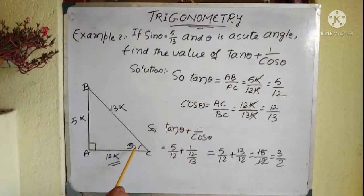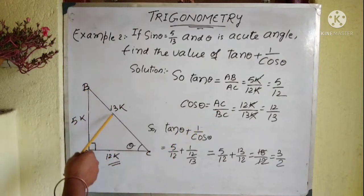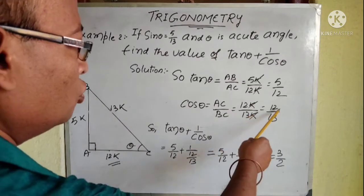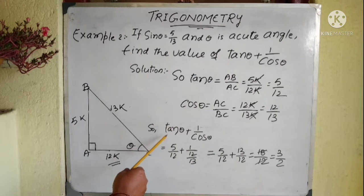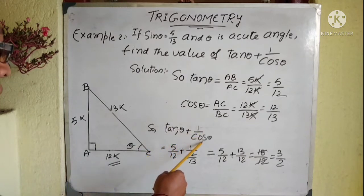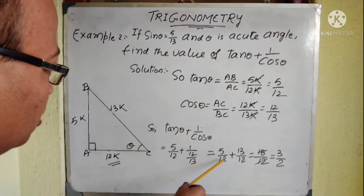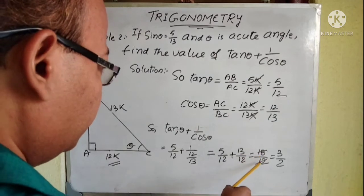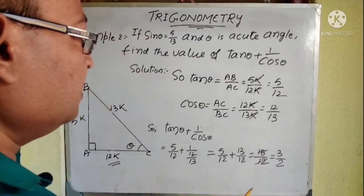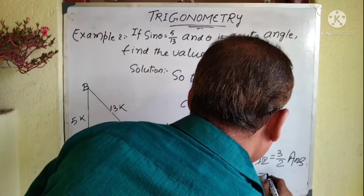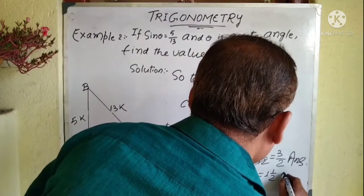Cos theta is base by hypotenuse: AC by BC equals 12k by 13k — k cancels — so cos theta equals 12 by 13. Now find tan theta plus 1 by cos theta: substitute the values: 5 by 12 plus 13 by 12 equals 18 by 12, which simplifies to 3 by 2, or equivalently 1 and 1 half. Both are correct.